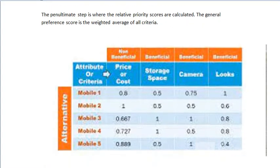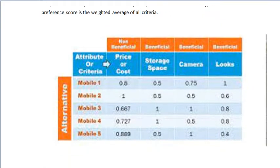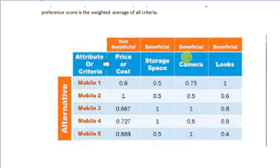Let me give you a simple example. Suppose you want to purchase a new mobile. Nowadays, multiple options are available — let's say mobile one, two, three, four, five — five types of mobiles or companies to choose from. Now what are the criteria? First, the price and cost of the mobile, then the storage space, then the camera, and then the look and feel. So there are multiple criteria available based on which you can take the decision.